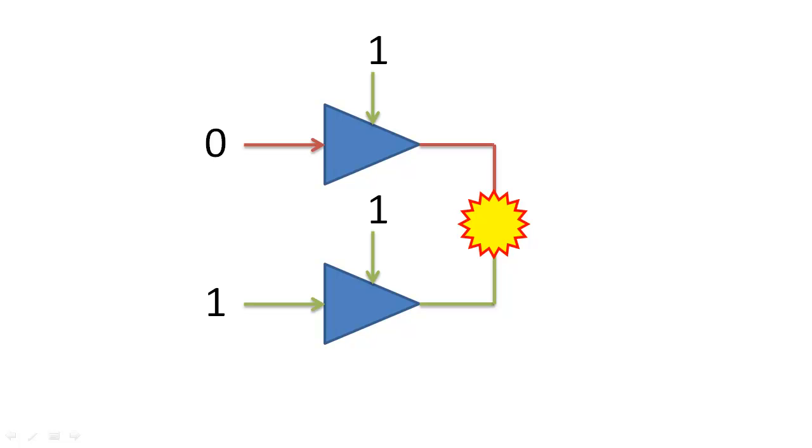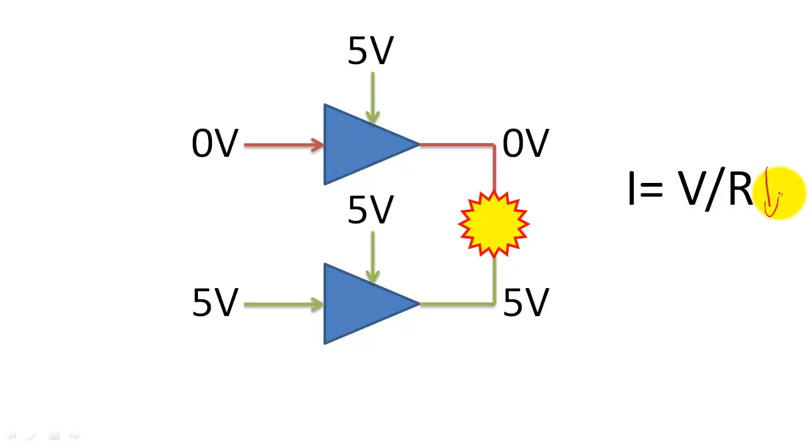To illustrate why this happens, we need to remove the digital abstraction and look at the voltages and currents. If two components that output to the same wire transmit different voltages, the current in the system will be governed by the resistance of the wire and the difference of voltage.